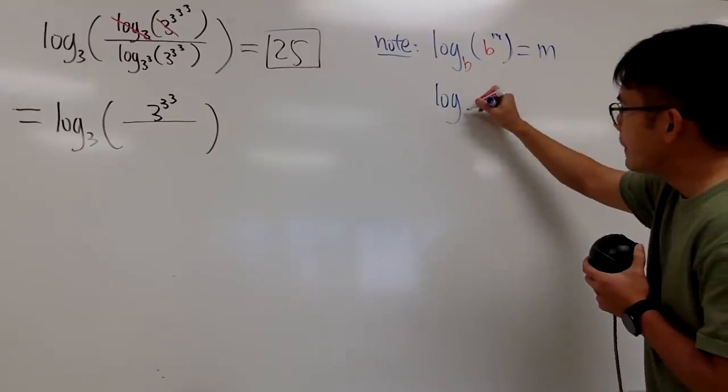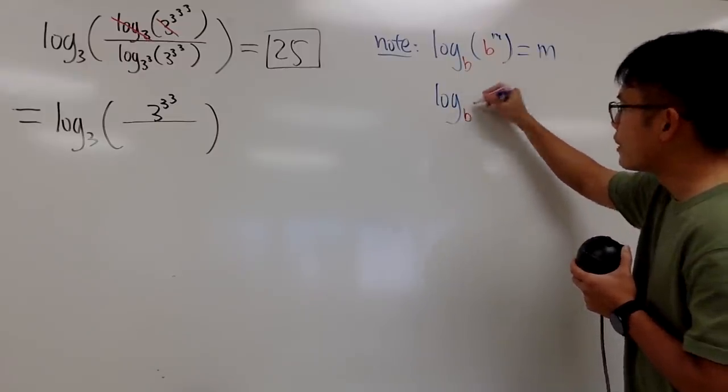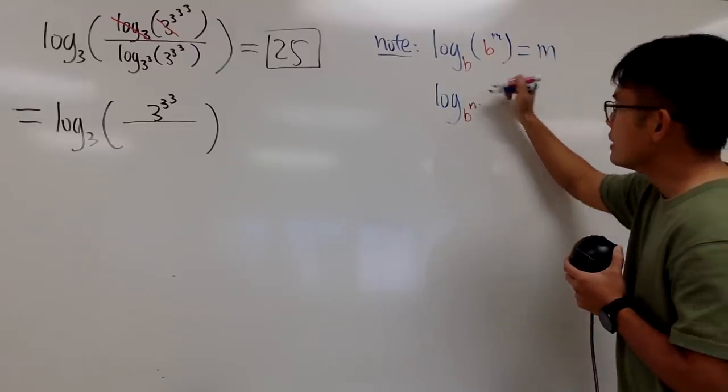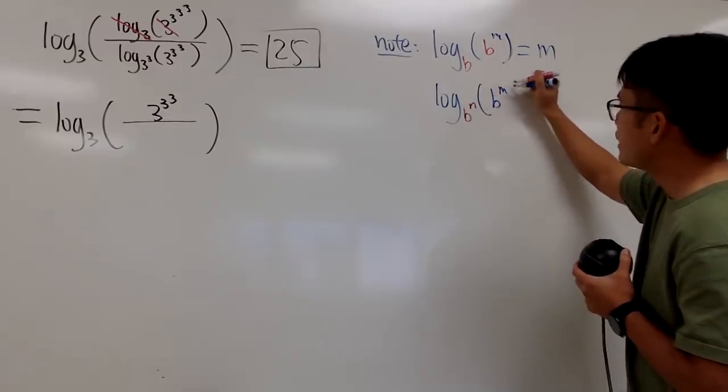When you have log base b, but this time suppose you have b to some power, we'll just put this down as n. And then if you have this, and the input is b to the m's power, like this.